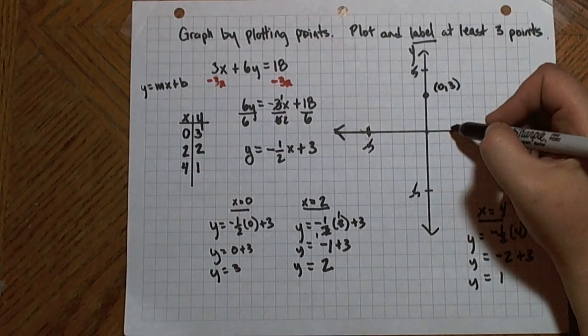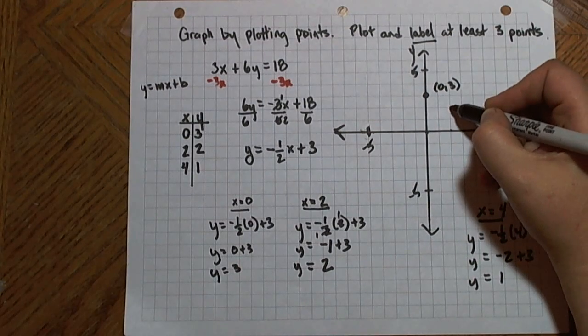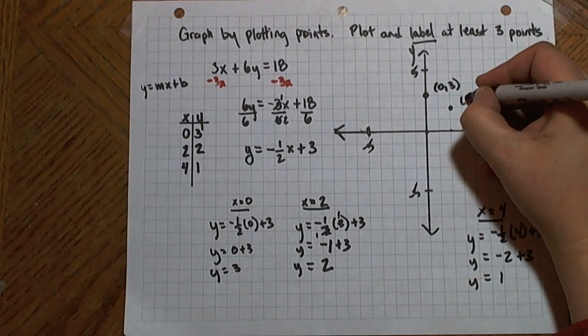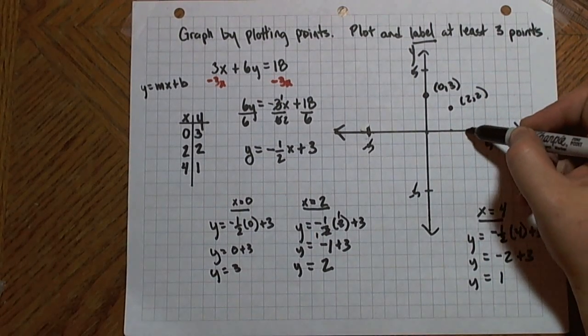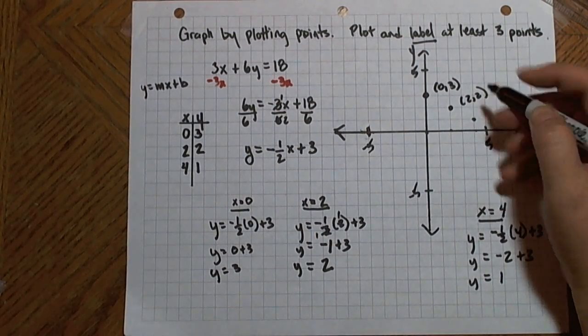Then I have the point 2, 2. And I have the point 4, 1. 1, 2, 3, 4 on the x, 1 on the y.